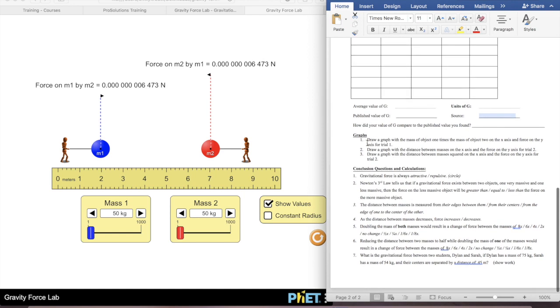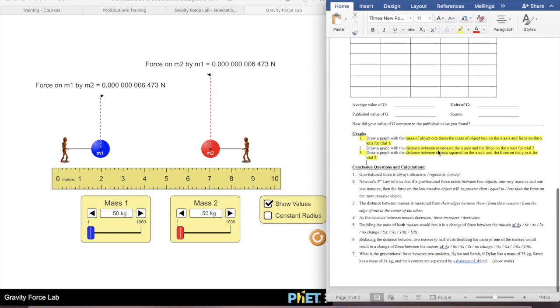We'll make three graphs. So you'll have the mass of object one times the mass of object two on the x-axis and force on the y-axis for trial one. And then you'll have the distance between the masses on the x-axis and the force on the y-axis for trial two. And then you'll have the distance between the masses squared on the x-axis and the force on the y-axis also for trial two. So this is telling you exactly what you need on your x-axis and exactly what you need on your y-axis.